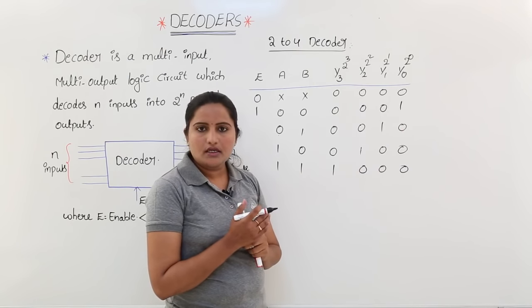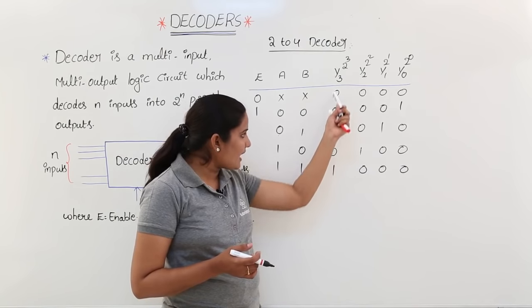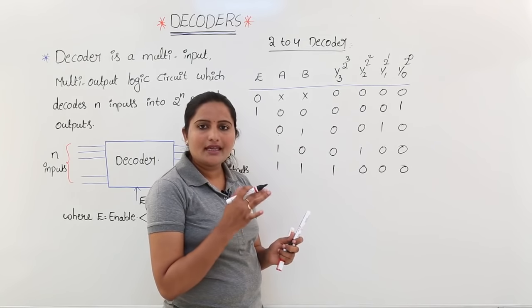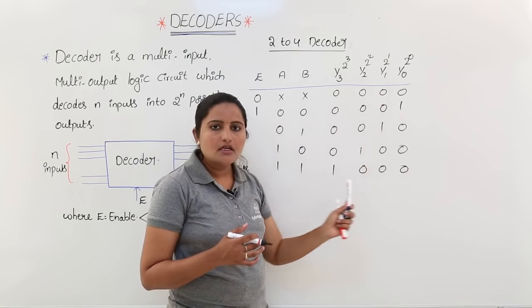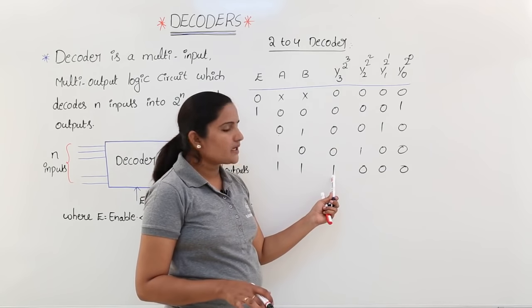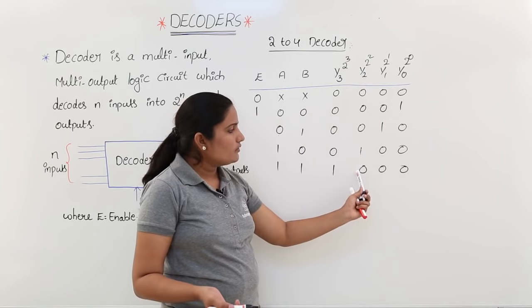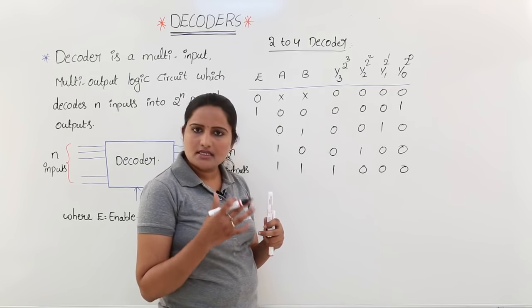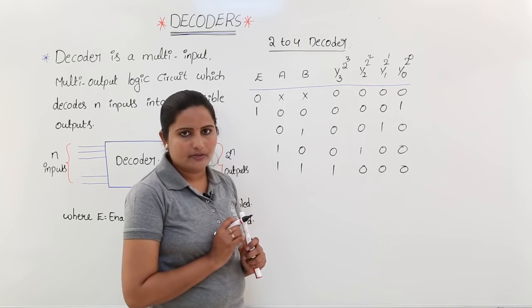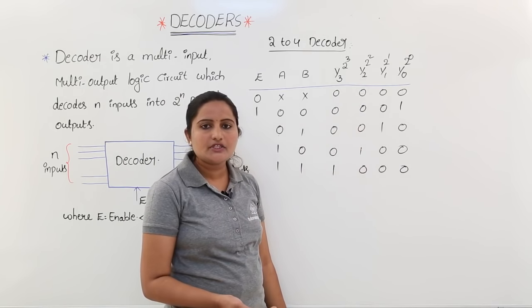Now it is time to derive the logic circuit for the decoder. Previously we used K-maps for each output line. However, if you draw the K-map and there is only a single 1 in any output line, the same expression will come out directly. When you see a single 1 in your table, there is no need for a K-map — you can directly write the expression. Only when there are multiple 1s in one line do you take a K-map for a simplified expression.